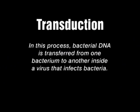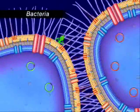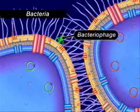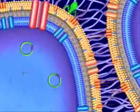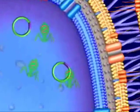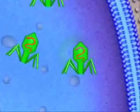Transduction. In this process, bacterial DNA is transferred from one bacterium to another inside a virus that infects bacteria. These viruses are called bacteriophages, or phage. When a phage infects a bacterium, it essentially takes over the bacteria's genetic processes to produce more phage.